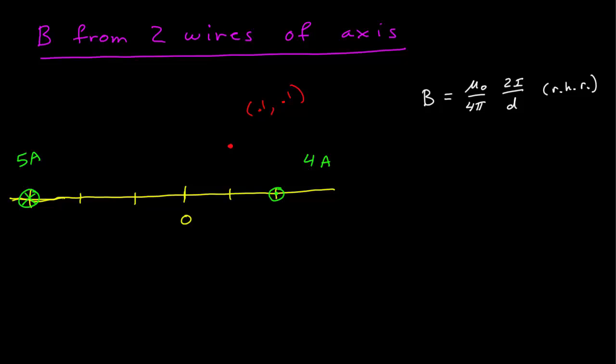In this video I want to solve for the magnetic field from two wires for an arbitrary point off axis. I have a system of two wires on the positive x-axis. One is at 0.2 meters from the origin with a current of 4 amps coming out of the screen. Another wire is at 0.3 meters with a current of 5 amps going into the screen. I want to calculate the magnetic field at the red dot at point (0.1, 0.1) meters.